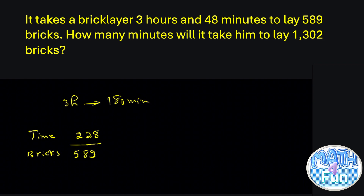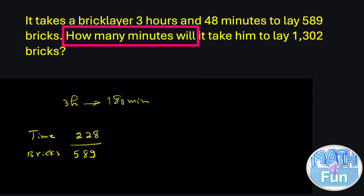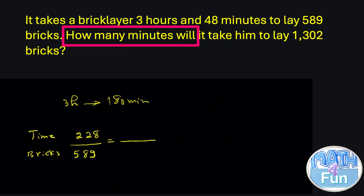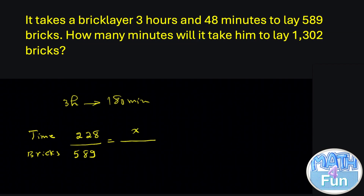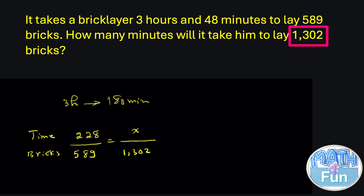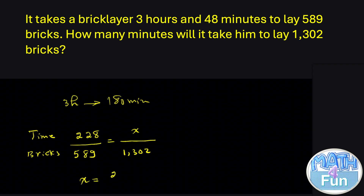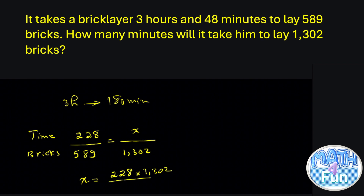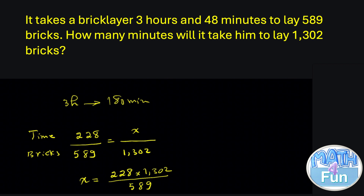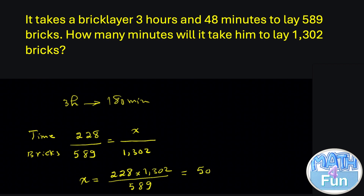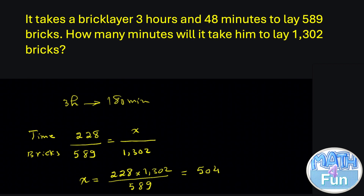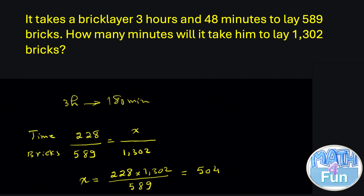Now, they are asking how many minutes will it take him to lay 1,302 bricks. We write it as a fraction and set up the proportion: x is the minutes, and the bricks is 1,302. You can solve this by saying x = 228 multiplied by 1,302 over 589. Or you can use the shift-solve method or cross multiplication by calculator. You get the final answer as 504 minutes to lay 1,302 bricks.